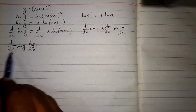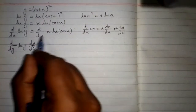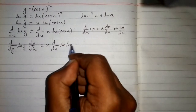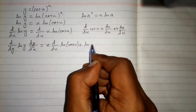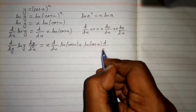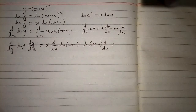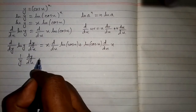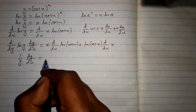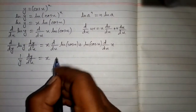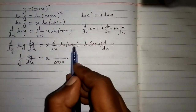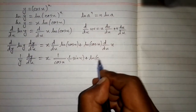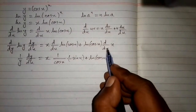Now we can differentiate ln y with respect to y, and on the right side we apply the product rule. So we have x times derivative of ln of cos x, plus ln of cos x times derivative of x. The derivative of ln y is 1 upon y, multiplied by dy/dx, equal to x times the derivative of ln cos x, which is 1 upon cos x times the derivative of cos x, which is minus sin x, plus ln of cos x times derivative of x, which is 1.